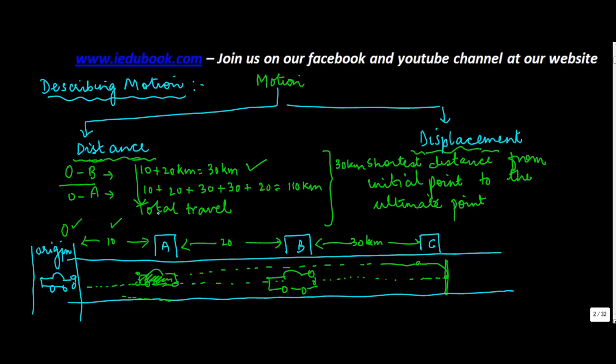But if you see in the second case when the car went from O to C and then came back till A, the displacement is what? The shortest distance from the initial point to the ultimate point. Initial point was the origin. Ultimate point is A. What is the distance between the two of them? 10 km. So the displacement in this case is only 10 km even though the car has travelled 110 km.